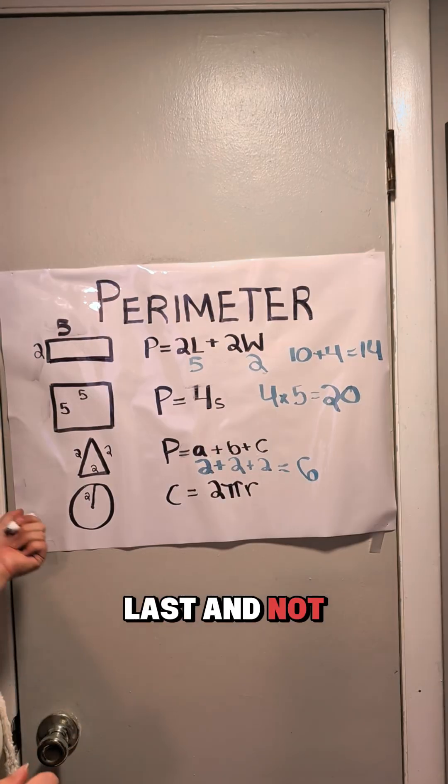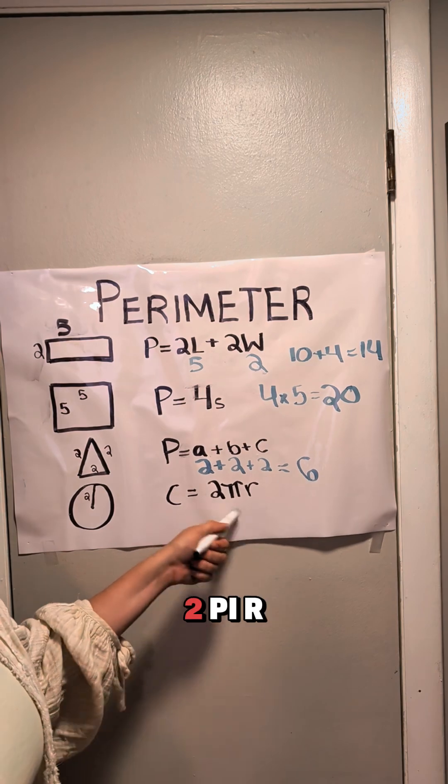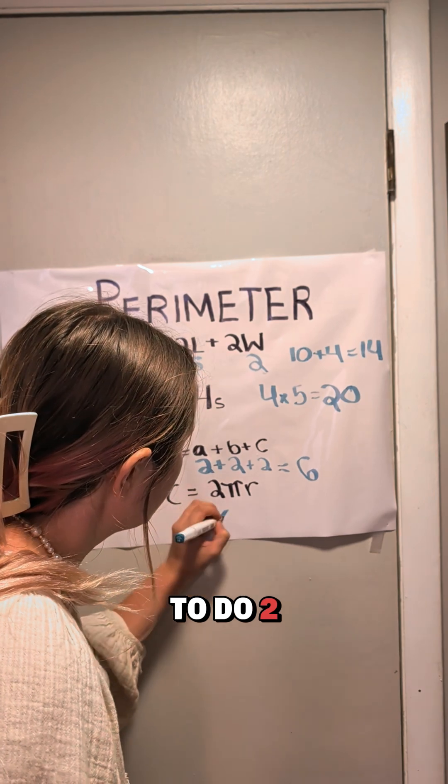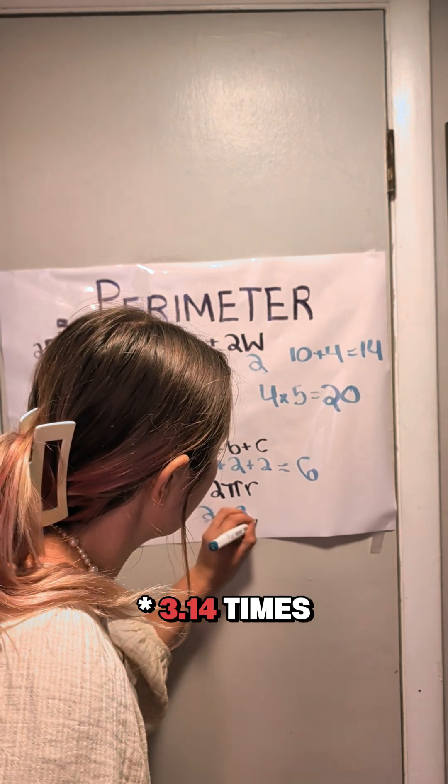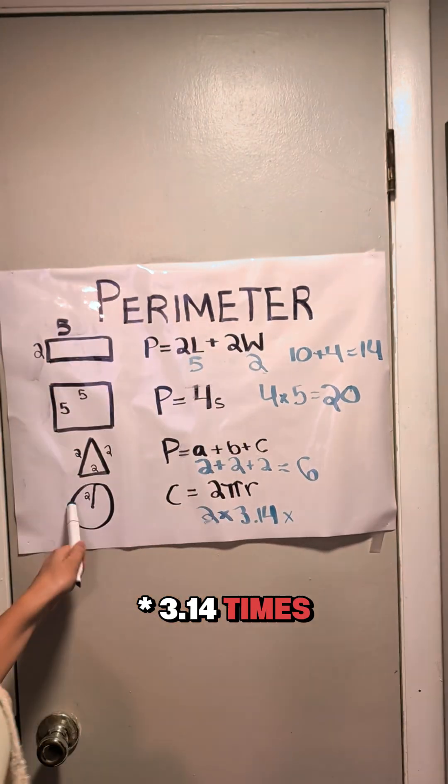Okay, last and not least, the circle, which is C equals 2 pi R. So we're going to do 2 times 3.14 times 2.